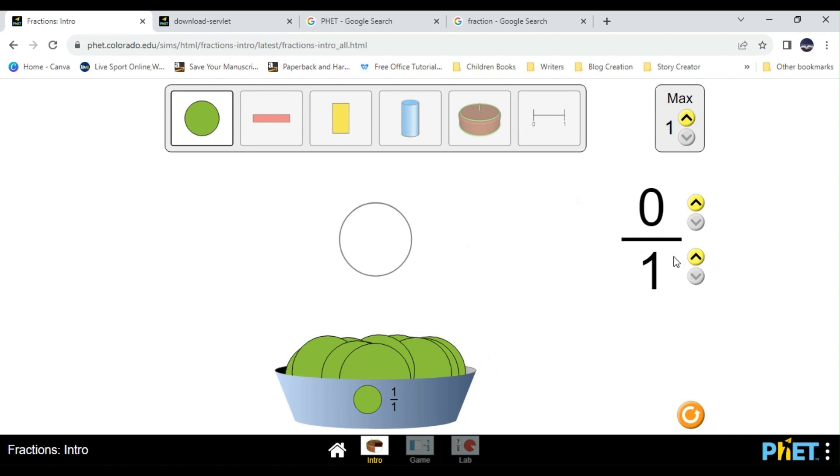Now, the reason why you are seeing this circle being blank is because we have zero as the numerator, which means that no part is selected. As you can see, we have one as our denominator because we have just one part of a circle. If, for example, I increase to two parts, as you can see right there, we have two parts.